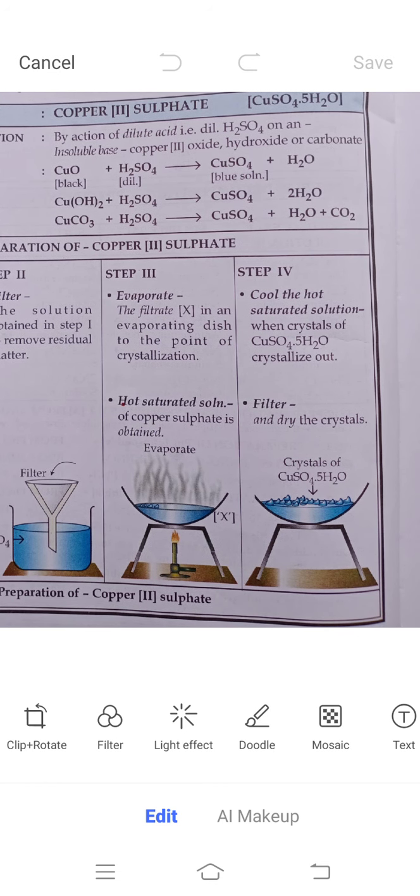In the fourth step, we cool the hot saturated solution till the time the crystals appear. You can do the cooling in an ice bath - take a tray of ice and put that container containing your solution into it. After it crystallizes, we will remove all the crystals and dry it.